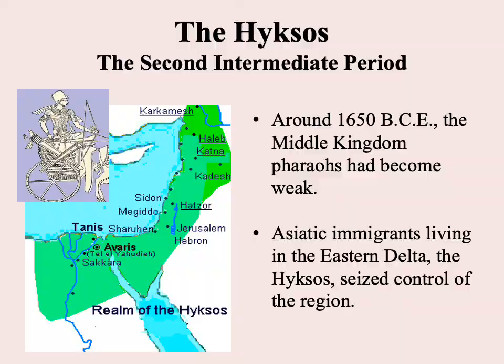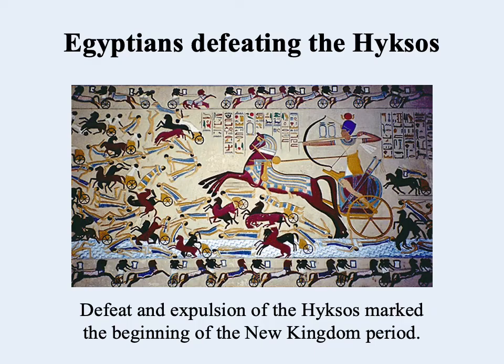The end of the Middle Kingdom was more dramatic than the ending of the Old Kingdom — it involved the invasion and occupation of Egypt by a foreign people, Asiatic immigrants known as the Hyksos, who had moved into the Eastern Delta and eventually seized control of the region around 1650 BCE. The Hyksos adopted Egyptian government, Egyptian forms, the Egyptian language, and Egyptian customs, but were never perceived as Egyptian by the indigenous population. They were perceived as foreigners, and eventually the Egyptians rose up, defeated and expelled them, marking the beginning of the New Kingdom.